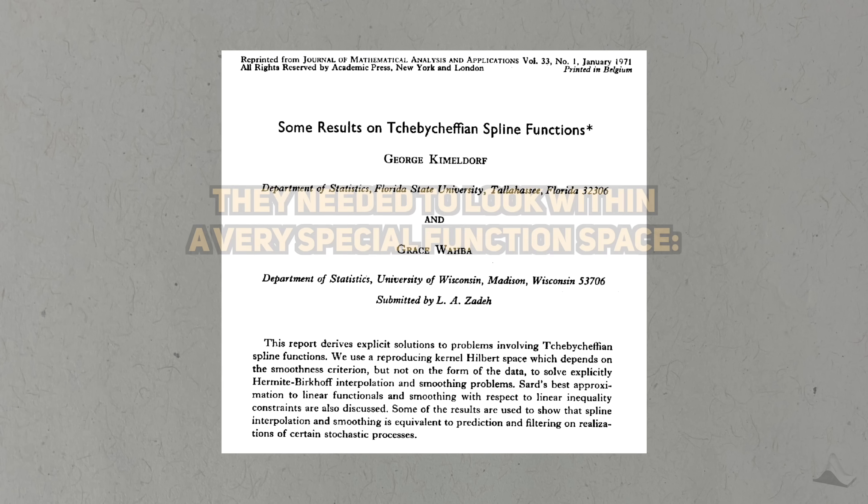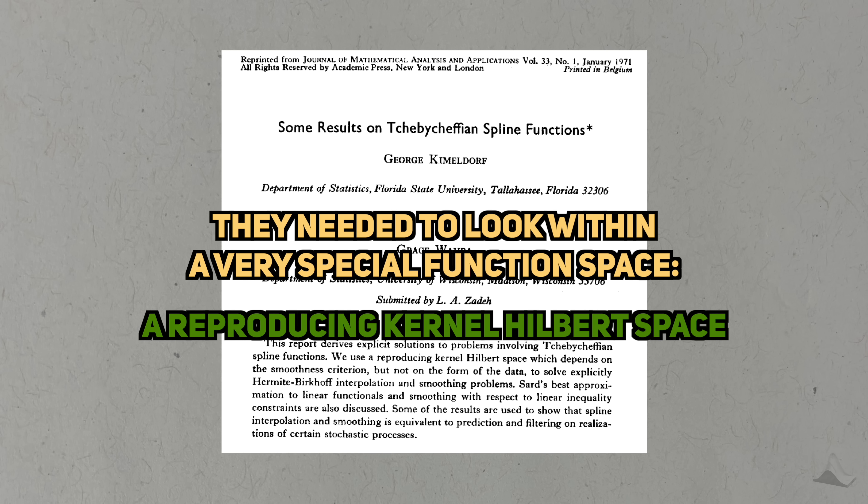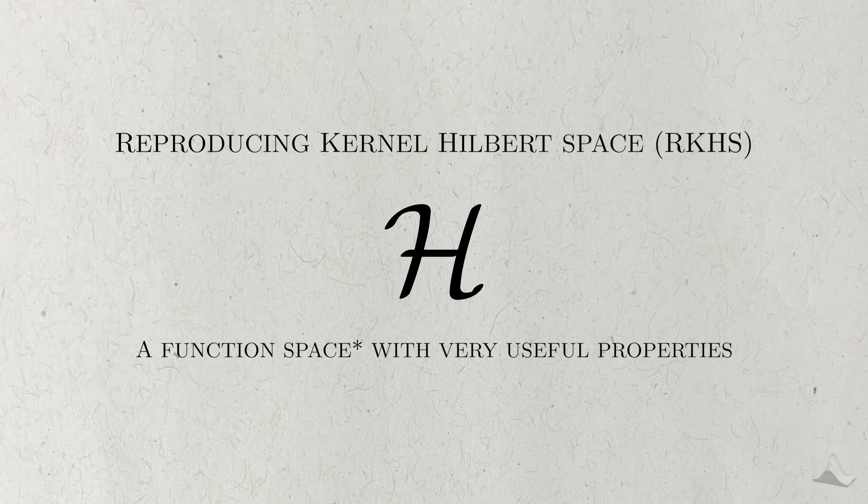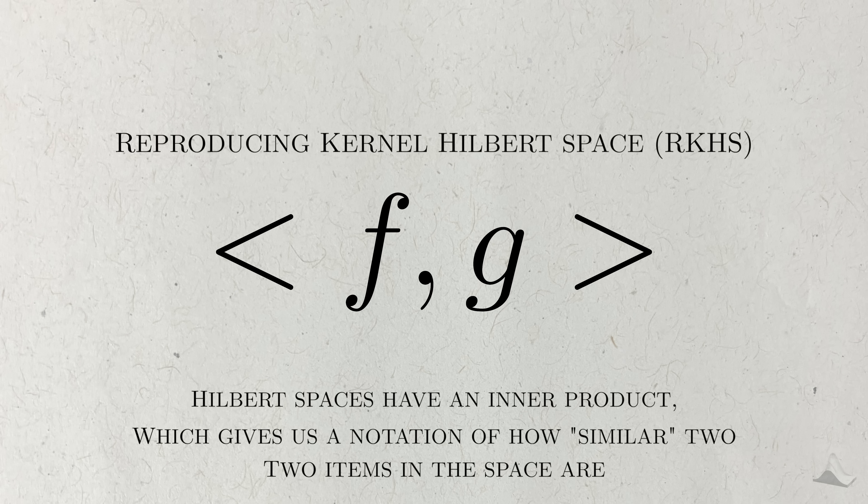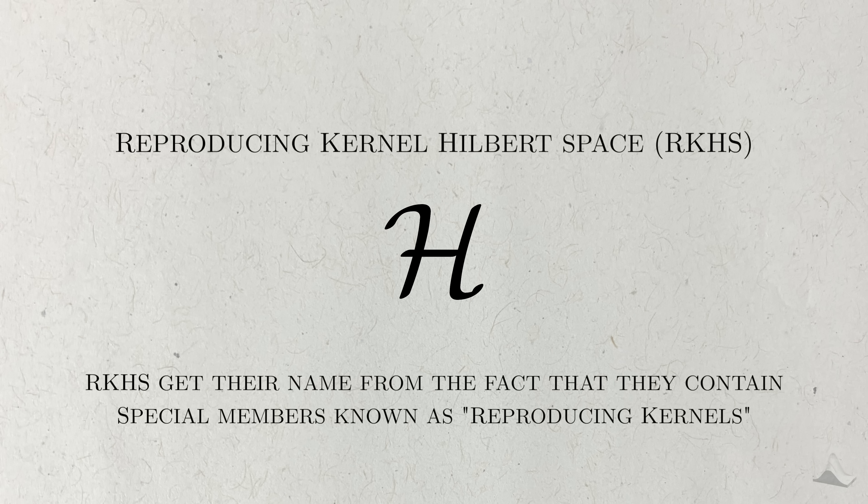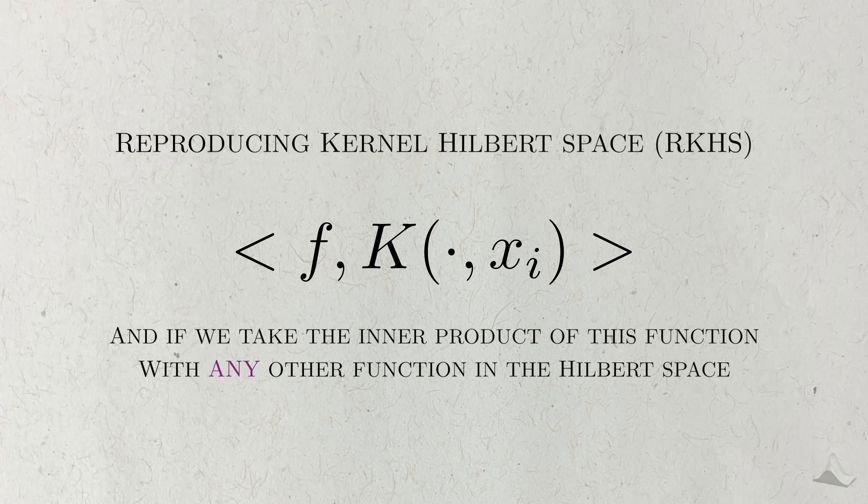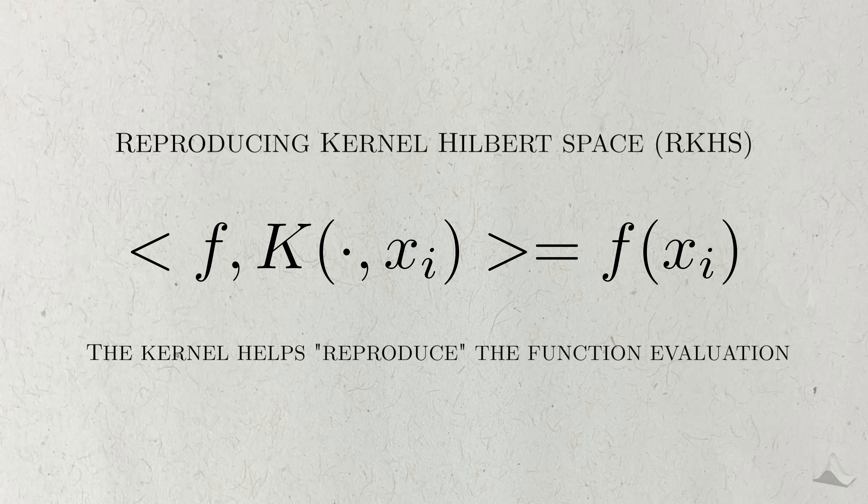Now's a good time to introduce these K functions. One insight that Professor Wahba and her collaborator had was that they needed to look within a very special function space called a reproducing kernel Hilbert space to try to minimize the penalized least squares criterion. I know I lost like 90% of you by saying that, but stay with me. A reproducing kernel Hilbert space is a type of function space with useful properties. Hilbert spaces have an inner product, which gives us a notion of how similar two items in the space are. Reproducing kernel Hilbert spaces get their name from the fact that they contain special functions called reproducing kernels, which I'll denote as K. If we equip it with an observation from our dataset, we'll get a function. And if we take the inner product of this kernel with any other function that's also in the Hilbert space, this will make it as if we took the same observation and evaluated it at this function. The kernel helps reproduce this function evaluation.